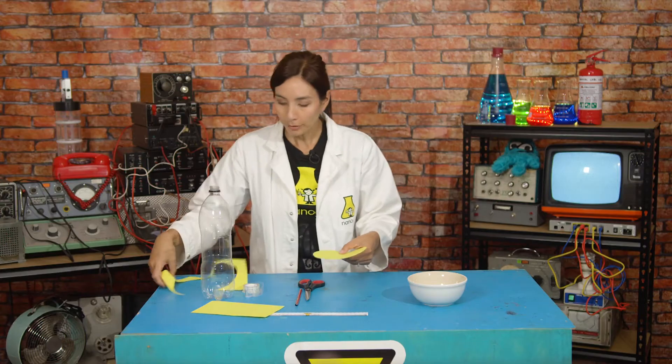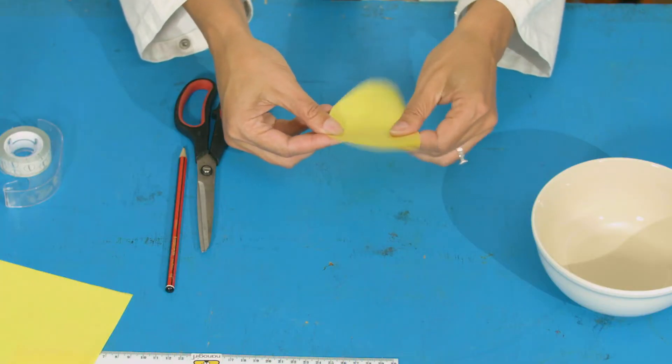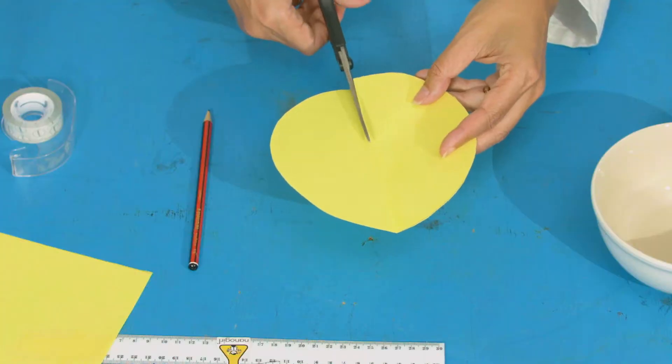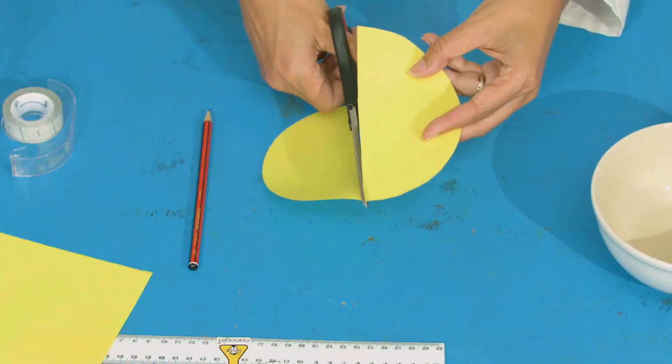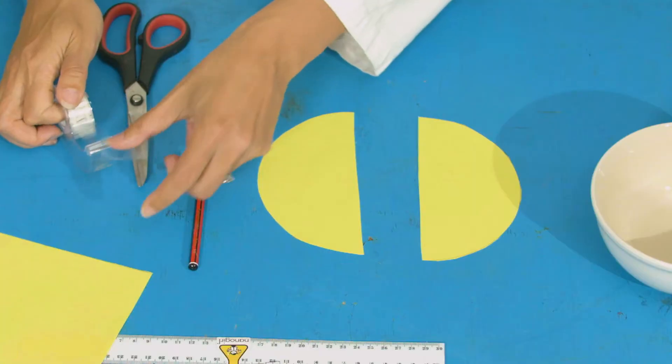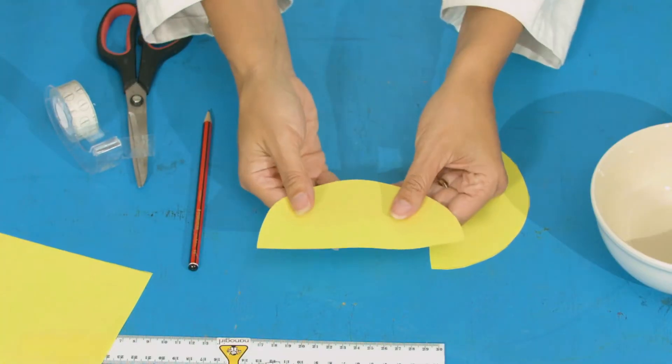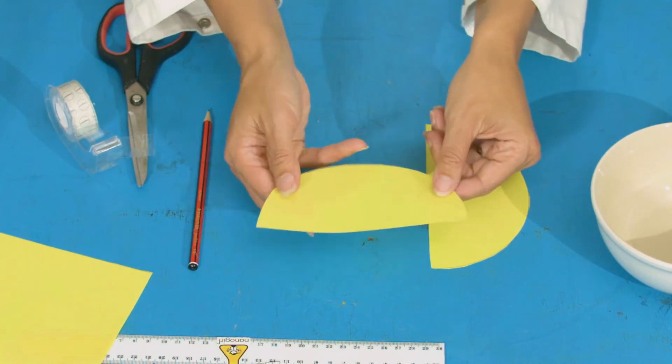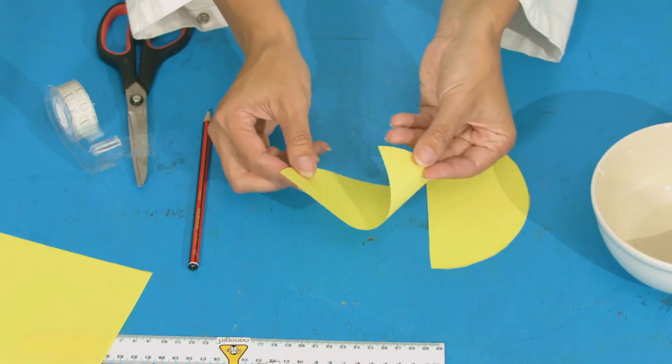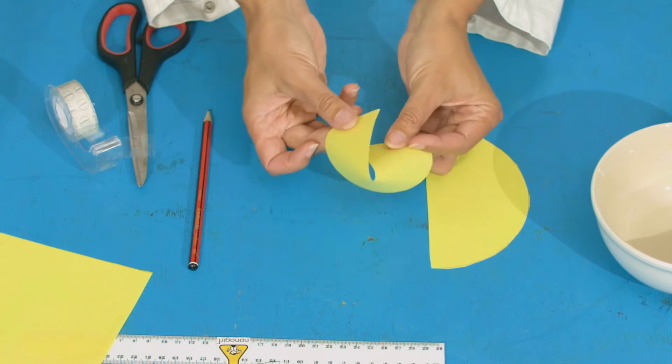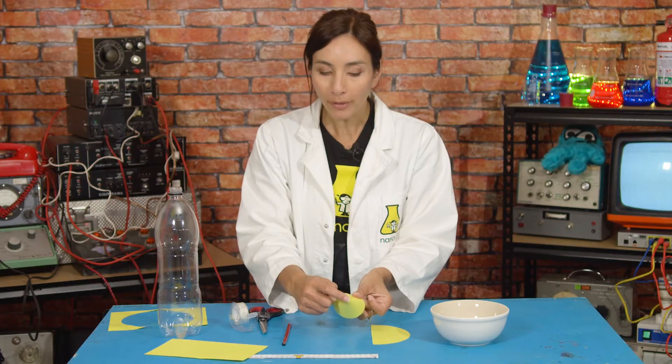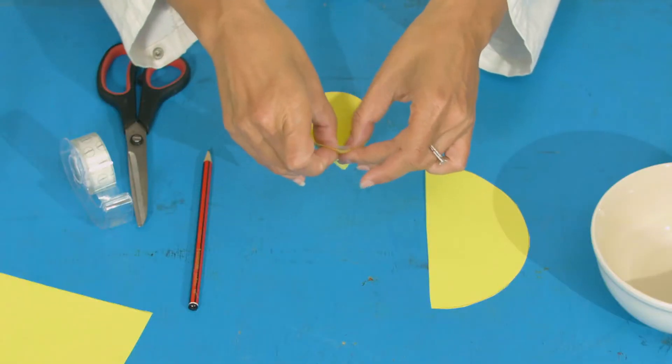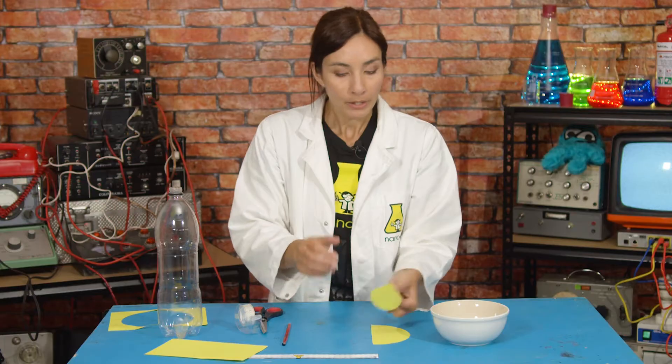You're going to fold your circle in half so you have a crease, and then cut down that crease so you've got two semicircles. Get some tape ready and hold this semicircle so the flat line is at the top. Roll your cone over making sure that there's no hole in the top, and then tape it sealed.